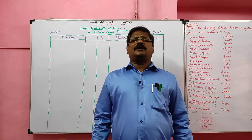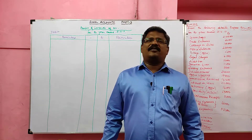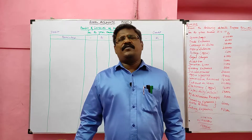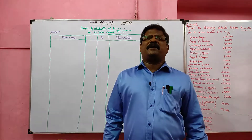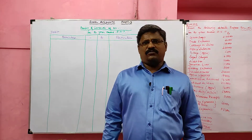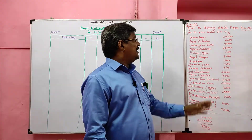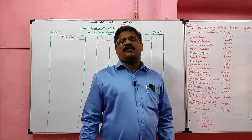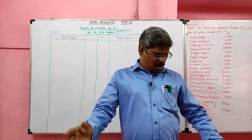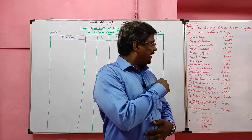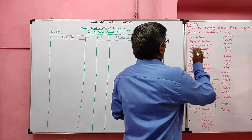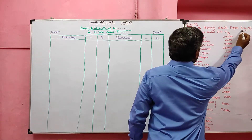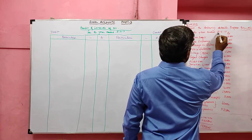Today we are going to learn about preparation of profit and loss account. In the last part we discussed the preparation of trading account. Now I am going to solve one problem. This question is taken from the Tamil Nadu government 11th standard textbook. Look at the board: from the following details, prepare profit and loss account for the year ended 31st December 2017.